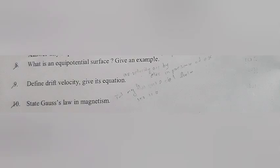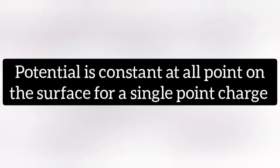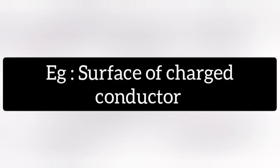Question 8: What is an equipotential surface? Give an example. Answer: Potential is constant at all points on the surface for a single point charge. Example: Surface of charged conductor.